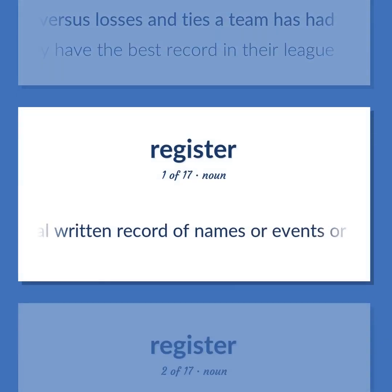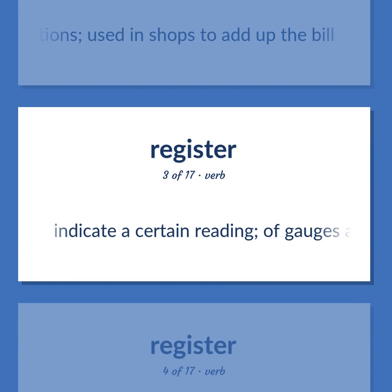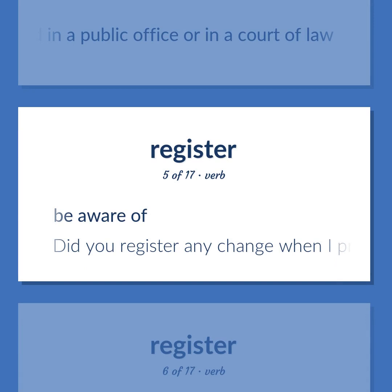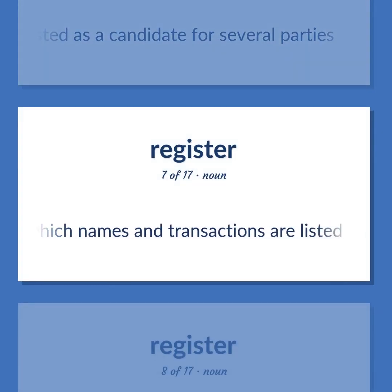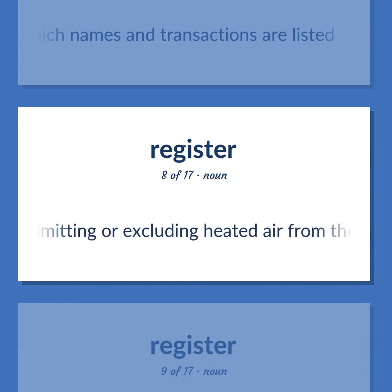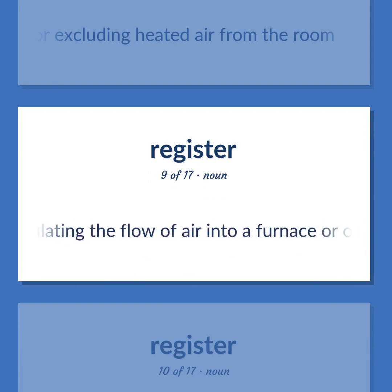Register: an official written record of names or events or transactions. A cashbox with an adding machine to register transactions, used in shops to add up the bill. Indicate a certain reading of gauges and instruments. Record in a public office or in a court of law. Be aware of — did you register any change when I pressed the button? Have one's name listed as a candidate for several parties. A book in which names and transactions are listed. An air passage, usually in the floor or a wall of a room, for admitting or excluding heated air. A regulator, as a sliding plate, for regulating the flow of air into a furnace or other heating device.